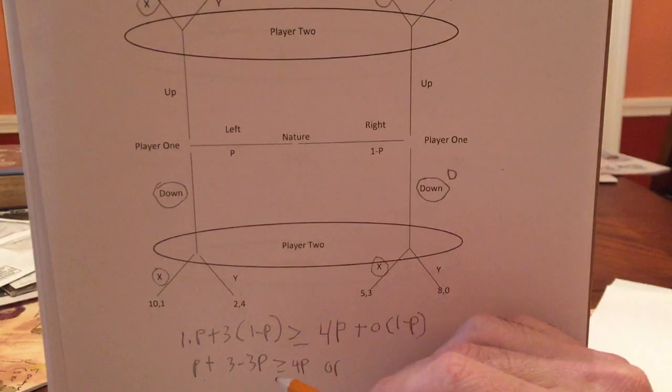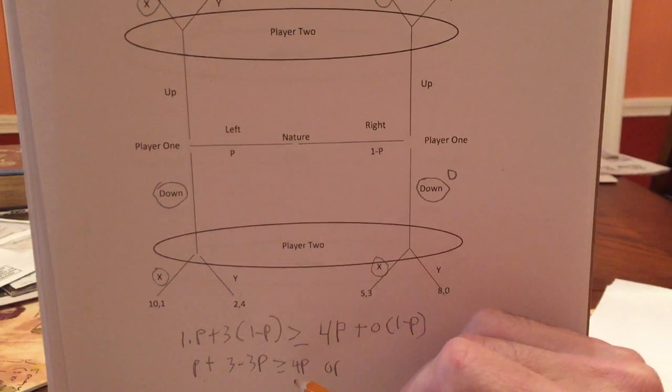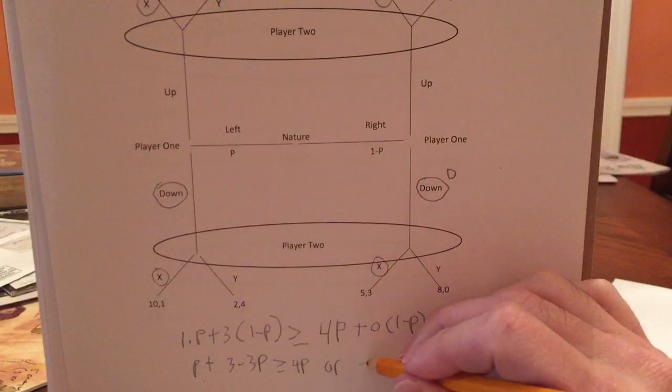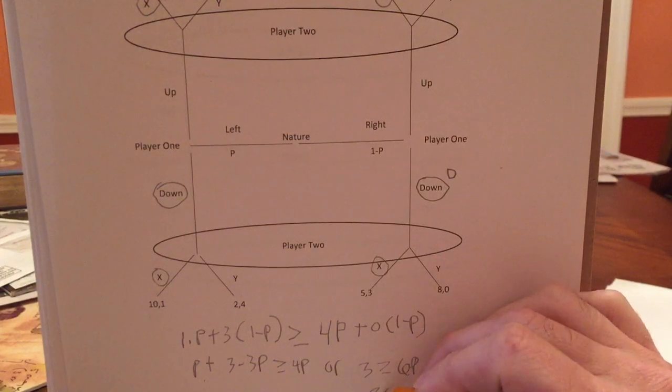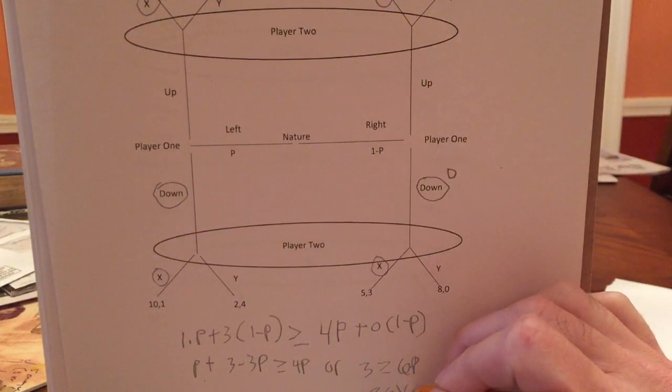Or, let's see, we get four, sorry about this, we get three is greater than equal to six P. So P has to be less than or equal to one half.